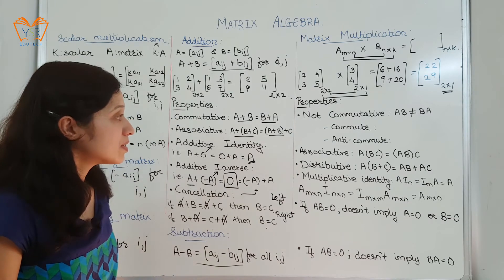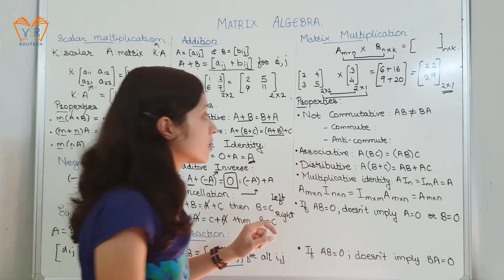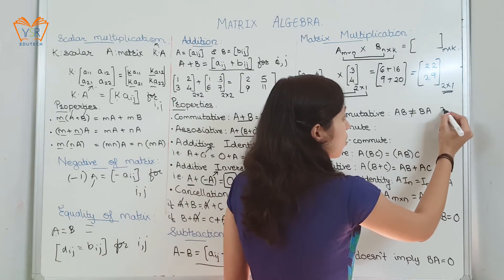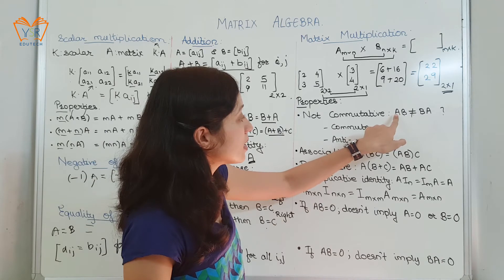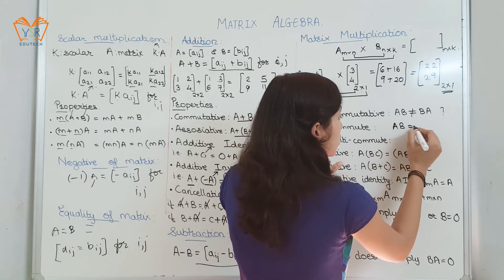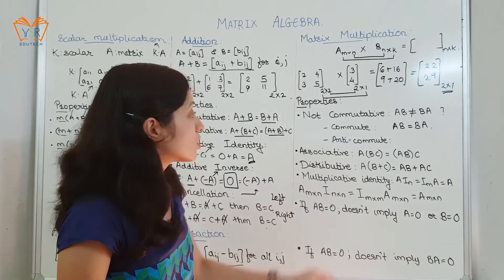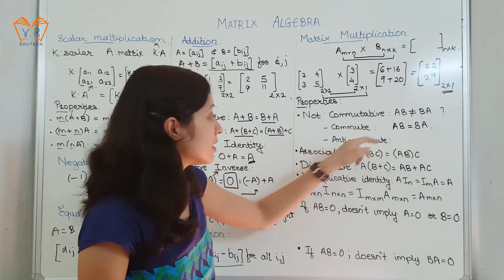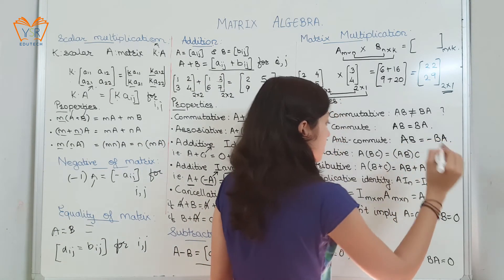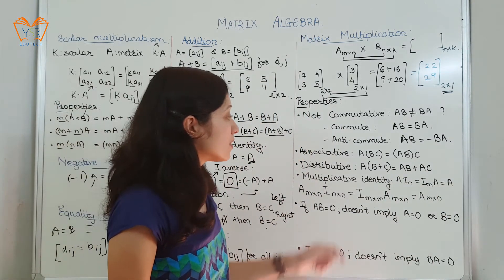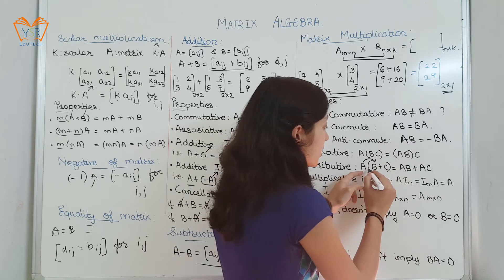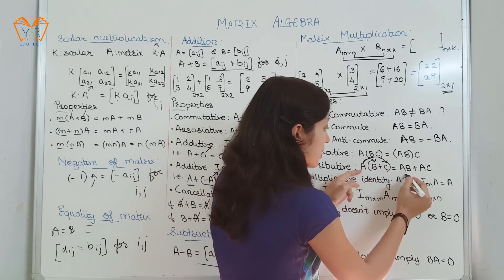Properties of matrix multiplication. First, matrix multiplication is not commutative — A into B is not equal to B into A; this may or may not hold true. Two matrices A and B are said to commute when A×B equals B×A. On the contrary, two matrices A and B are said to anticommute when A×B equals minus B×A. Next property is associative. Next is distributive with respect to addition: A into (B plus C) gives A×B plus A×C.